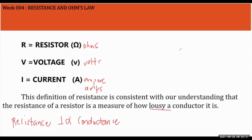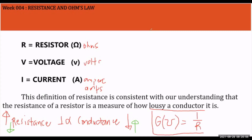The higher the resistance, the lower the conductance. The lower the resistance, the higher the conductance. Therefore, conductance G, with the unit of mho (siemens), is equal to 1 over resistance. You can get the conductance of a material by taking the direct reciprocal of its resistance. The reciprocal of resistance is what we call conductance.